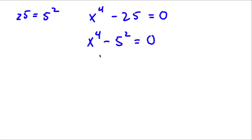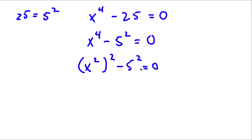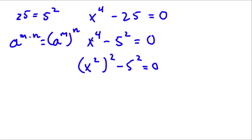Now x to the power of 4 is the same thing as x to the power of 2 to the power of 2. This is true because if I have something in the form a to the power of m times n, this is equal to a to the power of m to the power of n. So x to the power of 4 equals x to the power of 2 times 2, which equals x squared to the power of 2.